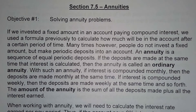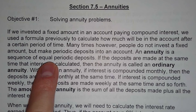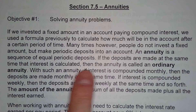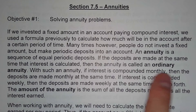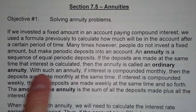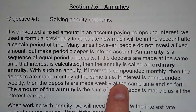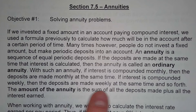If we invest a fixed amount in an account paying compound interest, we use the formula previously to calculate how much will be in the account after a certain period of time. Many times, however, people do not invest a fixed amount but make periodic deposits into an account. An annuity is a sequence of equal periodic deposits. If deposits are made at the same time that interest is calculated, then the annuity is called an ordinary annuity. With such an annuity, if interest is compounded monthly then deposits are made monthly, and if interest is compounded weekly then deposits are made weekly.